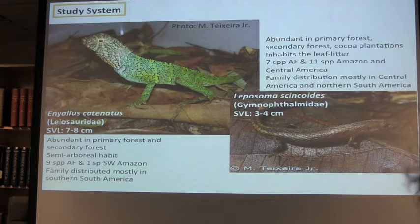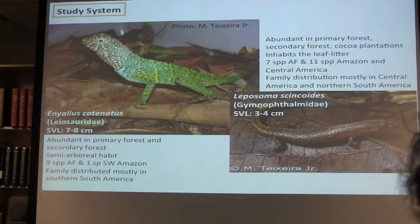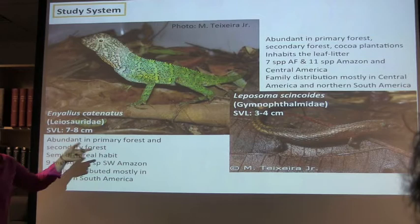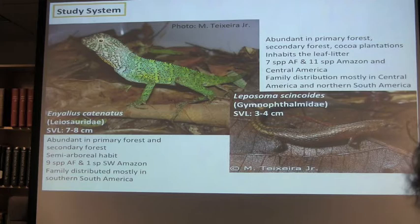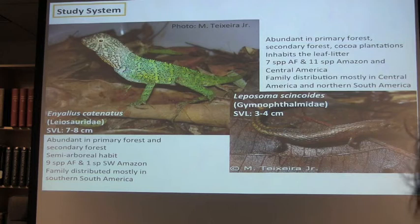A little bit about the species. These two genera are really prevalent in the Atlantic forest, and these two species in the central Atlantic forest. They're very different — you can't see from the picture, but the body size is really different. Eniallius is very abundant in primary or secondary forest; it really likes a good forest. It's a semi-arboreal species. There are nine species of Eniallius in the Atlantic forest and one with Amazonian distribution, and Eniallius is the genus with the northernmost distribution.